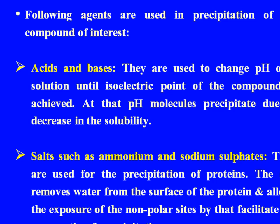There are a number of agents which are used in precipitation. First, acids and bases. They are used to change the pH of a solution until the isoelectric point of the compound is achieved. At that pH, molecules precipitate due to a decrease in solubility.